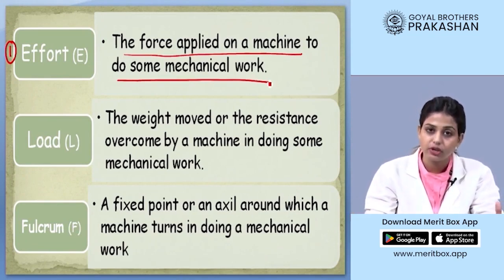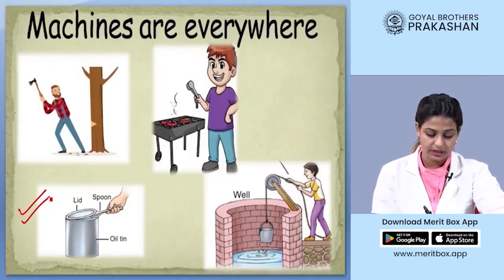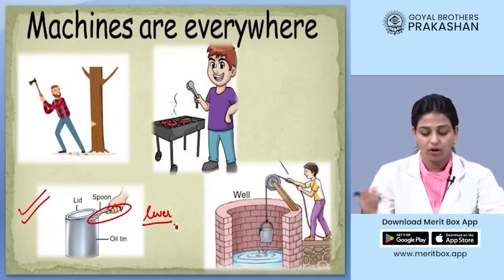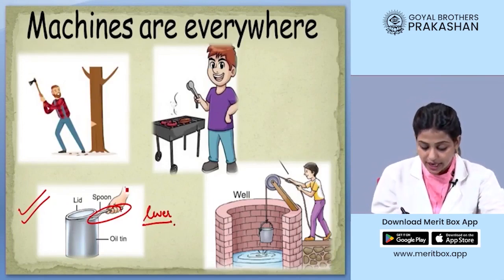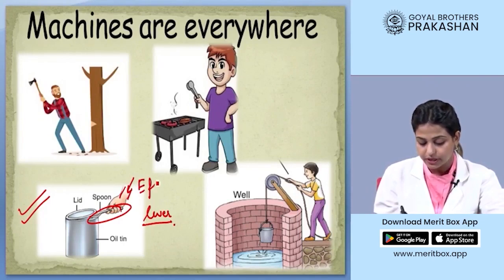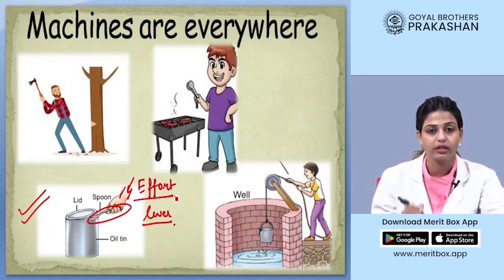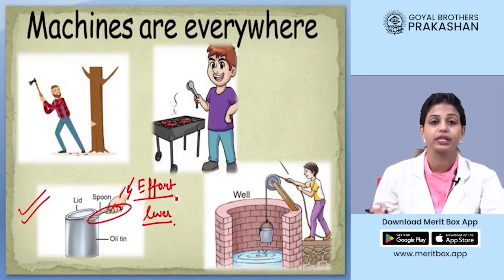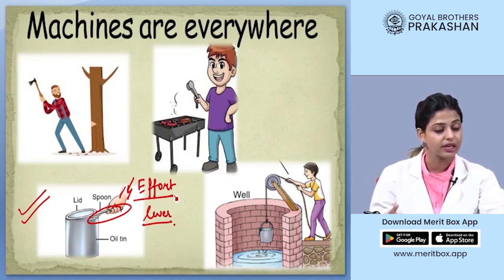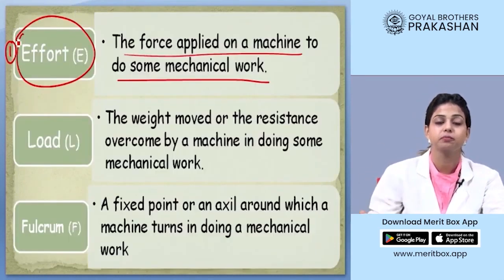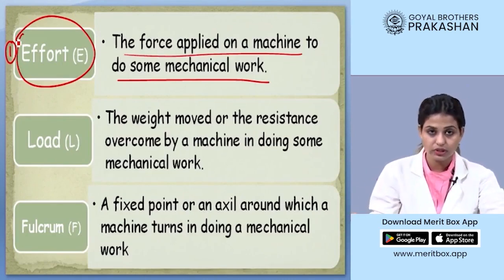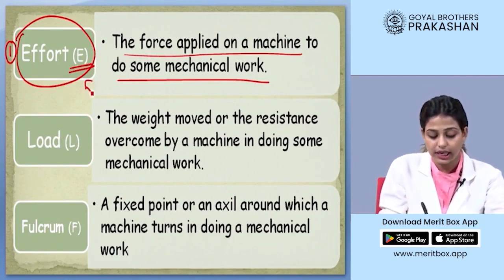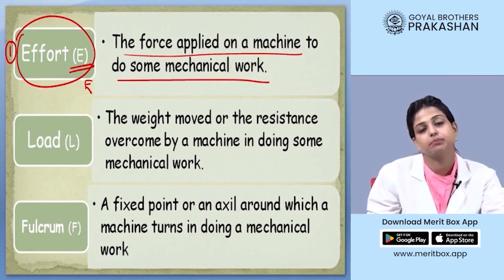Let's say I'm using a lever to open a lid. This is my lever. Now I'm using a lever to open a lid of a can. The effort that my hand is putting — the force that it is applying on the machine so that it can do the task of opening the lid — that is my mechanical work. That is defined as effort in terms of simple machines. It is referred to as E. So whenever E is written in terms of simple machines, it means effort.